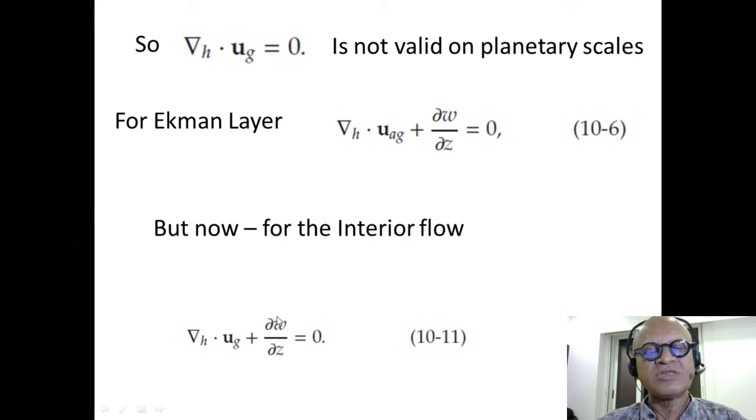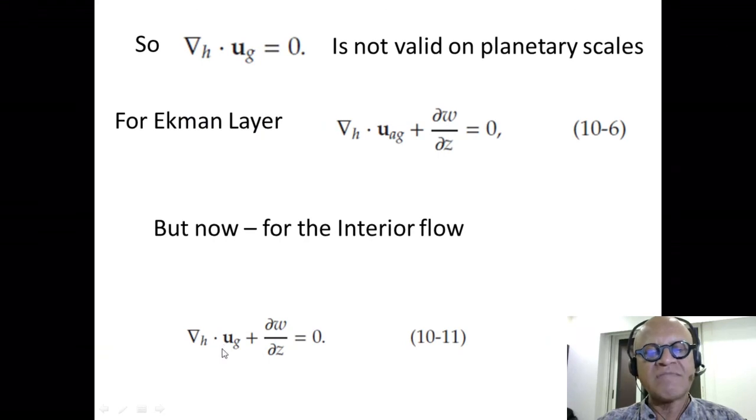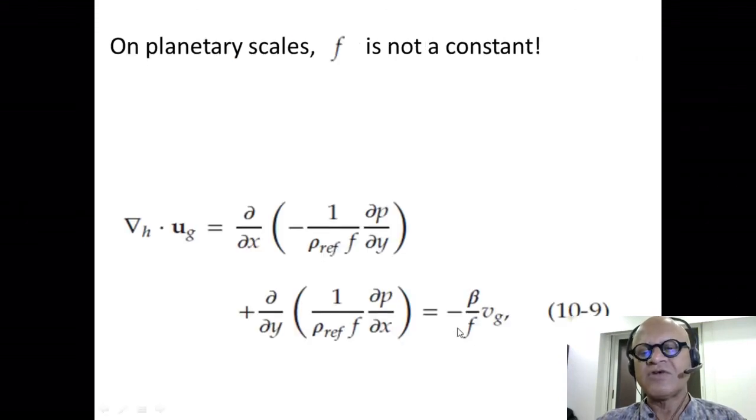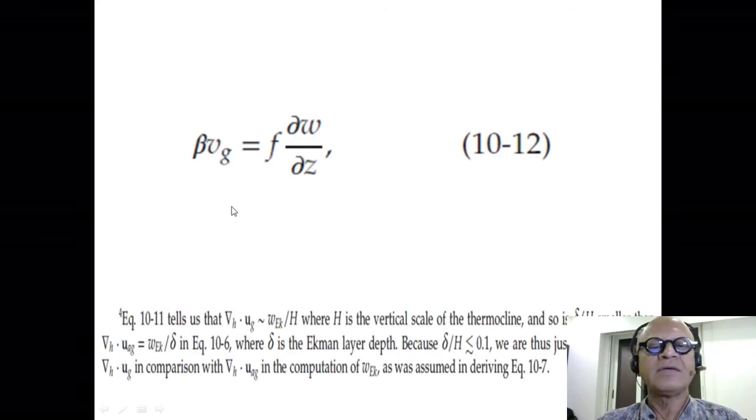So horizontal divergence plus dW/dz has to be 0. That gave us beta v_g equals F dW/dz because we derived this to be minus beta over F. That's, okay, that's our expression, minus beta or F v_g is the horizontal divergence of the geostrophic flow. We put that into this equation and we get beta v_g equals F dW/dz, okay?